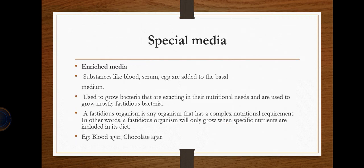Next we have enriched media. Substances like blood, serum, or egg are added to basal media so that bacteria can extract maximum nutrition. This is done to grow bacteria or colonies quickly. Fastidious organisms — those with complex nutritional requirements that only grow when specific nutrients are present — require enriched media such as blood agar and chocolate agar.